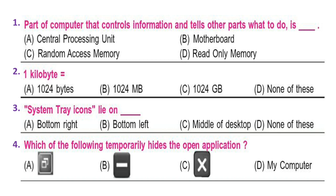Question 3: System tray icons lie on: A. Bottom right, B. Bottom left, C. Middle of desktop, D. None of these. Question 4: Which of the following temporarily hides the open application? Look at the options carefully and select your option.